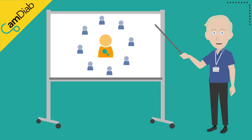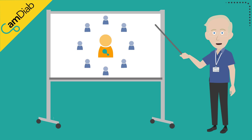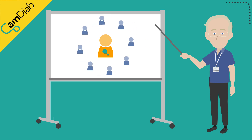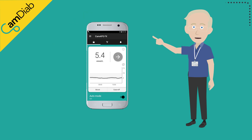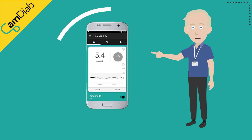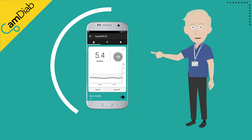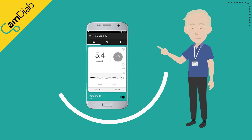The CamAPS FX algorithm uses a mathematical model of glucose regulation to decide on the amount of insulin to be delivered. This mathematical model predicts glucose levels up to four hours ahead. The prediction is influenced by what happened in the past, including past glucose levels as well as recent insulin delivery and meals or snacks that have been eaten.